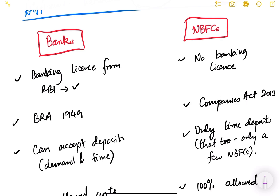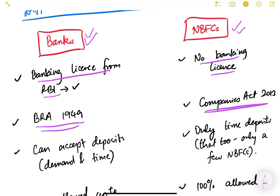I have made two columns here — one for banks and one for NBFCs — and we will discuss the differences point by point. The very first basic difference is that banks have a banking license from RBI, whereas NBFCs do not. Since banks have a banking license, they automatically come under the Banking Regulation Act of 1949, whereas NBFCs come under the Companies Act of 2013, as they are registered companies in India.